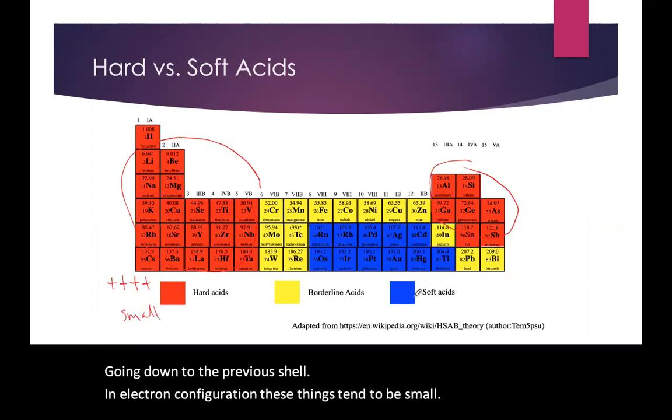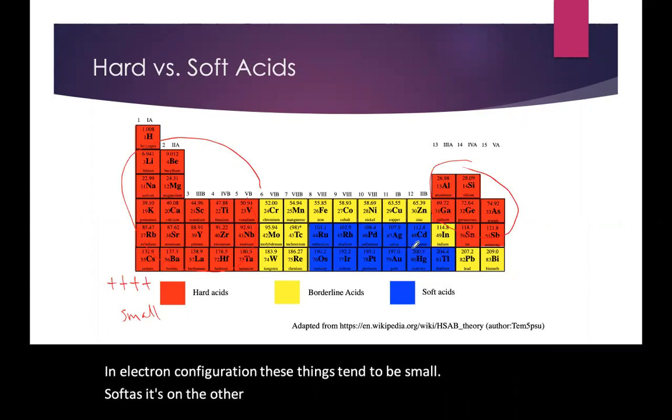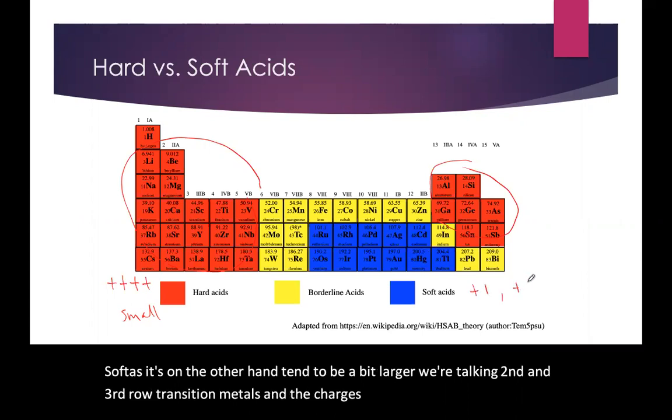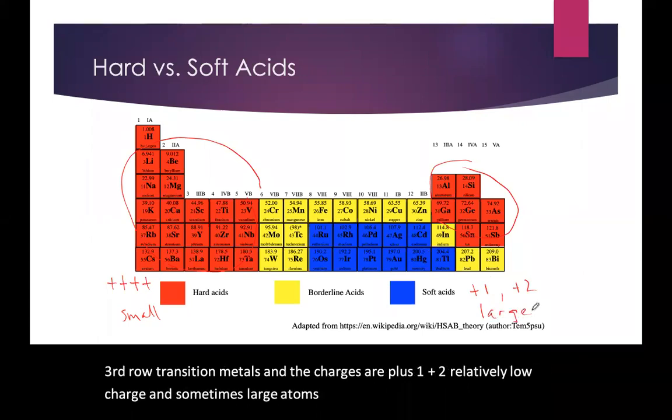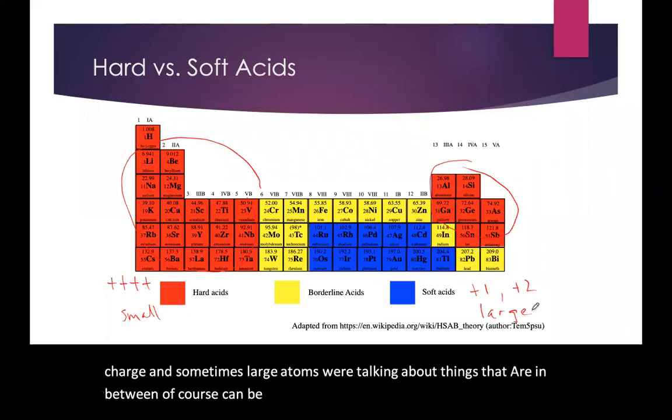Soft acids, on the other hand, tend to be a bit larger. We're talking second and third row transition metals. And the charges are plus one, plus two, relatively low charge and sometimes large atoms we're talking about. Things that are in between, of course, can be borderline. They're somewhere between a hard acid and a soft acid.